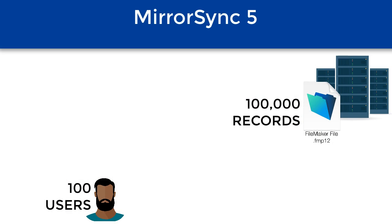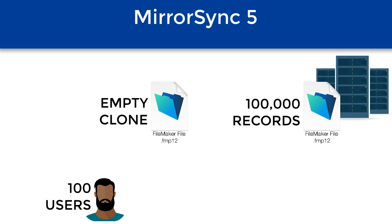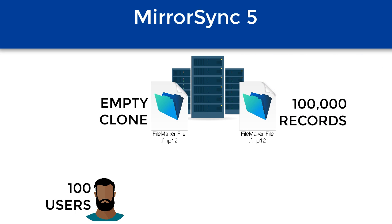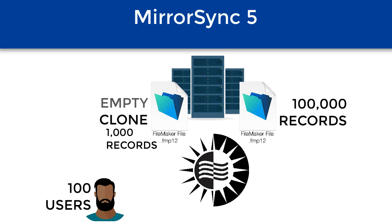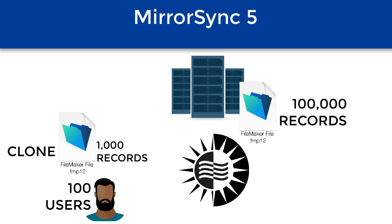What we came up with in MirrorSync 5 is a modification of that concept. We still save the empty copy of the file, but instead of sending that empty copy to the user, we temporarily host that empty copy on FileMaker Server, and then we run a fast server-to-server sync, getting that user's 1,000 or 10,000 records out of the million onto that empty copy — still hosted on FileMaker Server. When that finishes, we close that file on the server, and then we send that pre-populated file down to them with all their records already in it. They're not having to do that big batch of records on their small processor over their slow connection. They just press a button and wait — it all happens automatically.